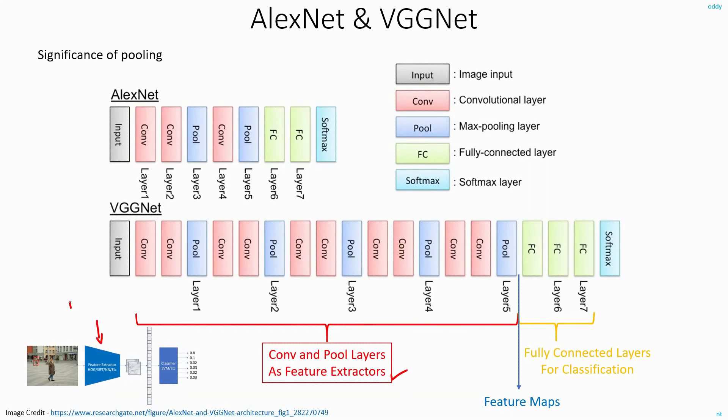In the classical computer vision based techniques, we had feature extractors like HOG, SIFT, etc. But here this role, the role of feature extraction is done by the convolution and pooling layers. And these layers, the fully connected layers and softmax, they are actually acting like classification layers.